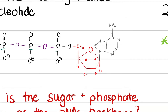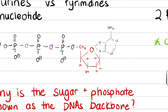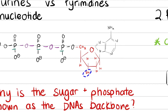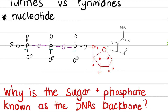We have also talked about ribose and deoxyribose sugars. The difference between a ribose sugar and a deoxyribose sugar is just what is located on the second carbon of the sugar molecule. If we see a hydroxide attached to the second carbon, it's a ribose sugar. And if we just see a hydrogen on the second carbon, it's a deoxyribose — that's all.